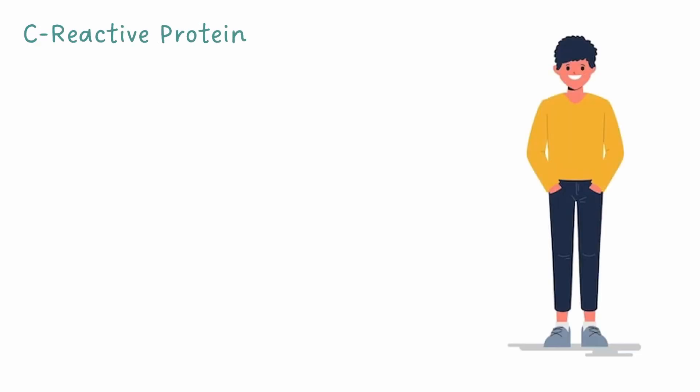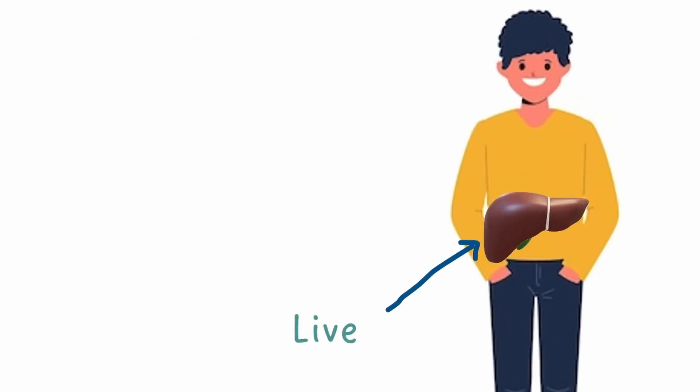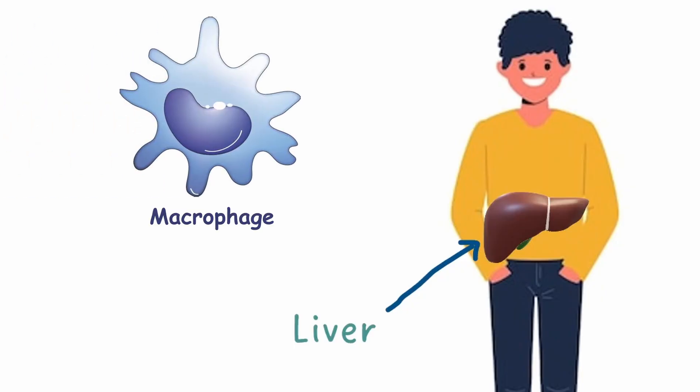Let's start with CRP. It's a protein that is released by the liver in response to any inflammation in the body. This process is mediated by macrophages, a highly abundant cell in our immune system.